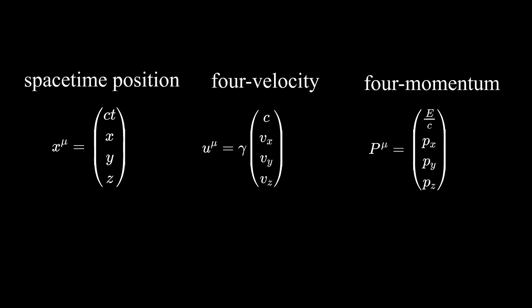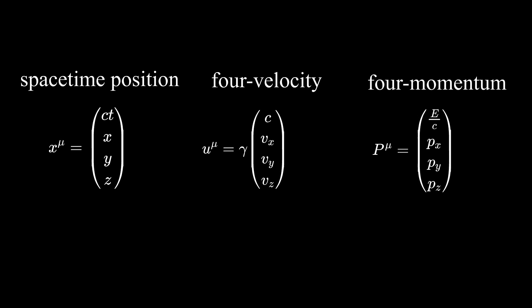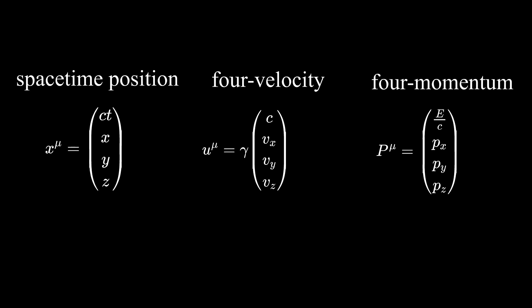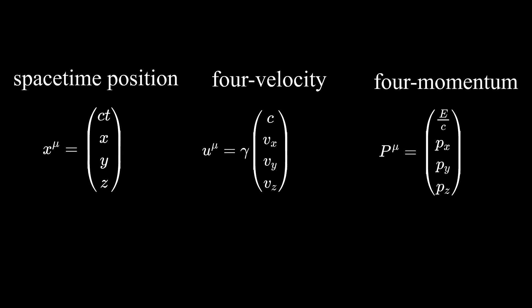Electromagnetism is not the only thing that needs to be rewritten in terms of four-dimensional quantities. Position, velocity, and momentum all have their four-dimensional representation in special relativity. Since the velocities we deal with on Earth are very small, it is difficult to notice any relativistic effect. But there are so many electrons inside a wire that even small velocities of charged particles can have a big effect — which is why the magnetic field around a wire was discovered so early.